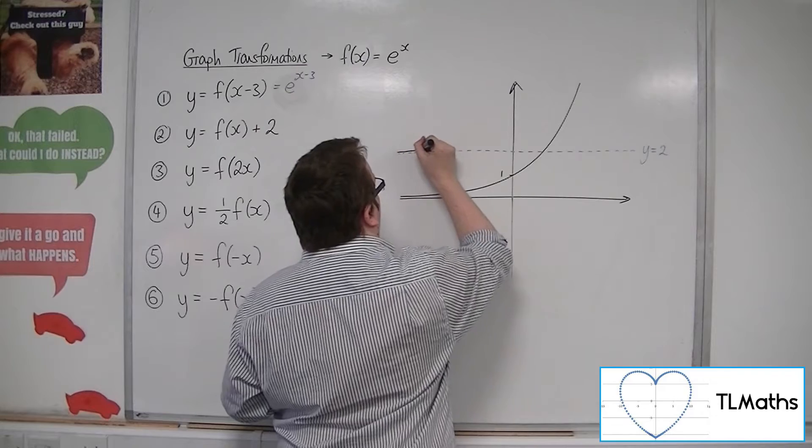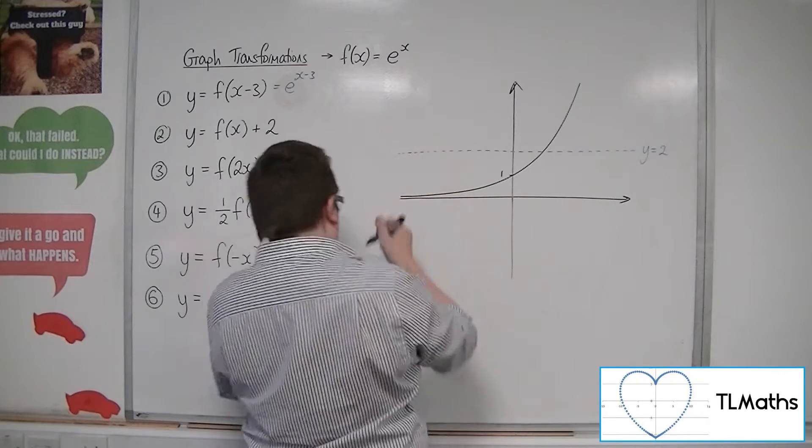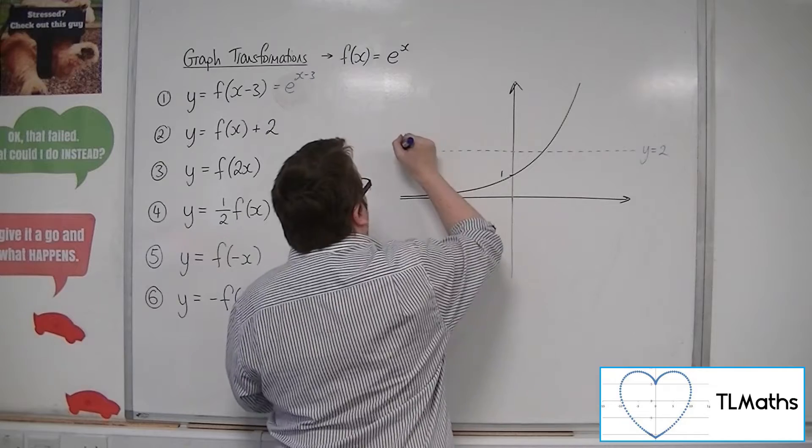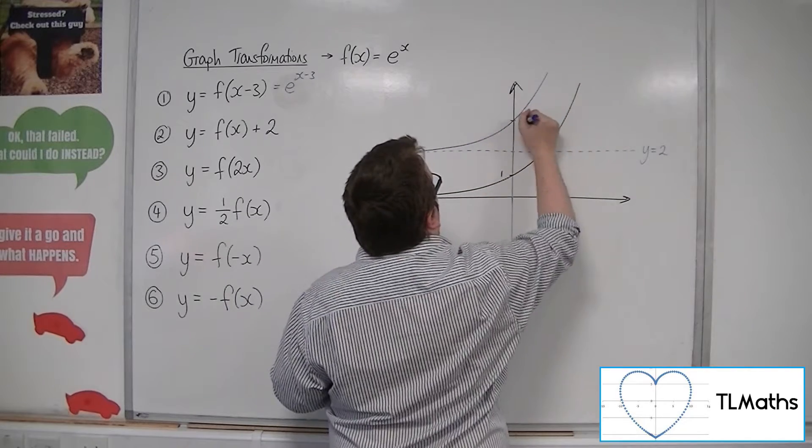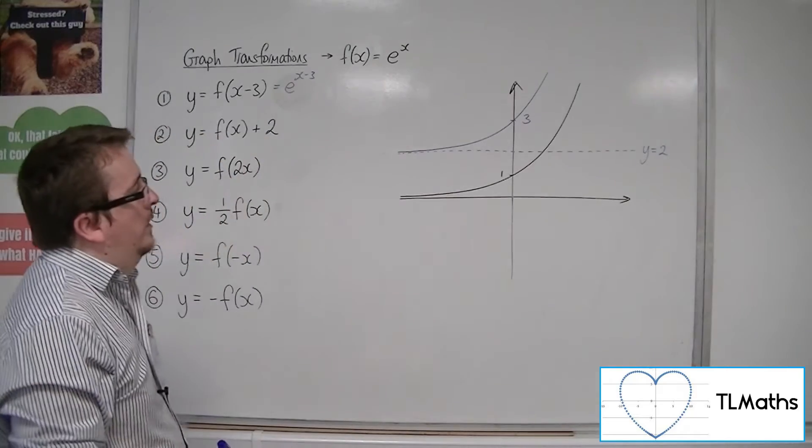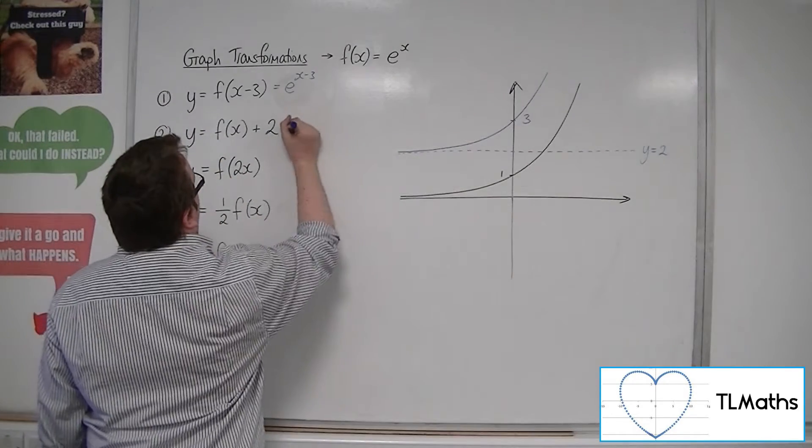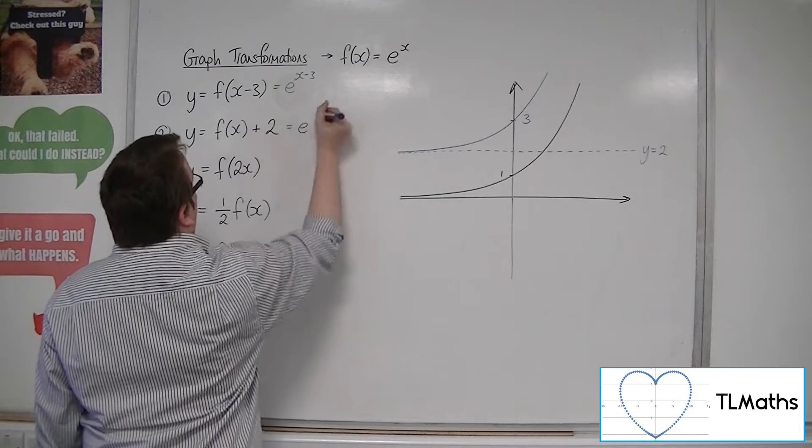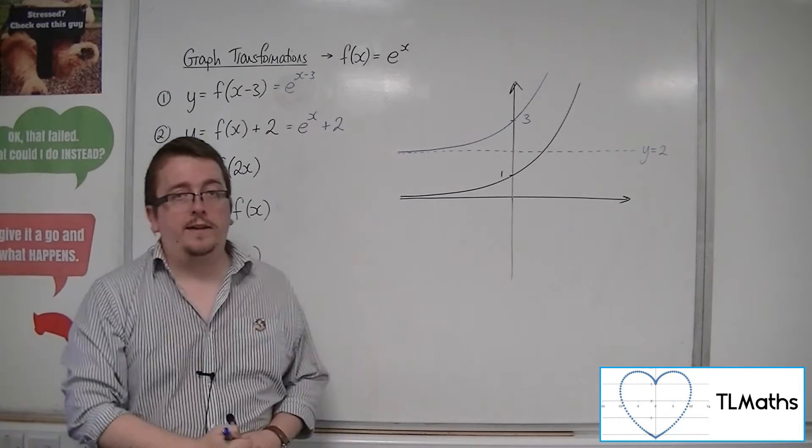So this curve, let me do it in blue, so that will be at 3. So that would be my translated curve. And the equation of it would be, well, f of x is e to the x plus 2. And that's what it would look like.